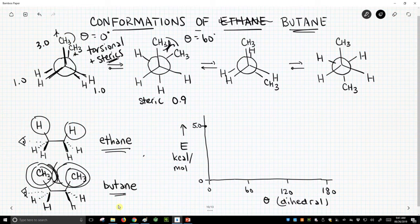It has an energetic cost of about 0.9 kcal per mole. So when we go on our graph at 60 degrees, we're not going to go all the way down to zero. We're going to go down to about 0.9. And this is called the gauche conformation of butane when we have a dihedral of 60 degrees.